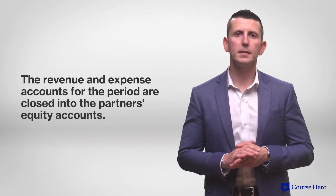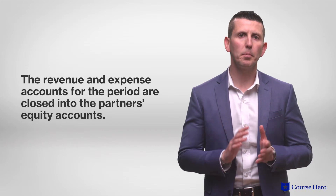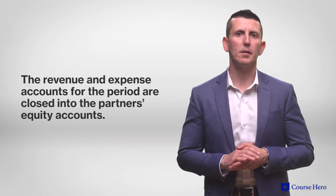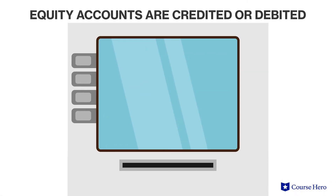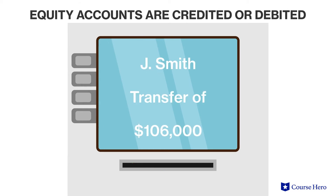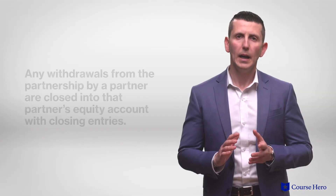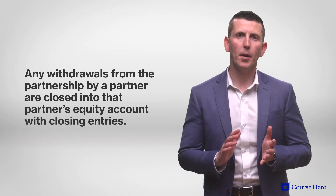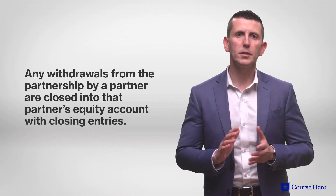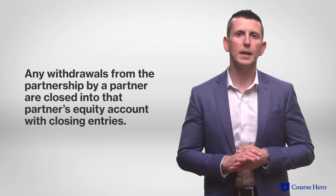At the end of the period, the partnership makes two closing entries. First, the revenue and expense accounts for the period are closed into the partner's equity accounts — each partner's equity account will receive a credit equal to their share of the net income, or a debit in the event of a net loss. Second, any withdrawals from the partnership by a partner are closed into the partner's equity account with closing entries.